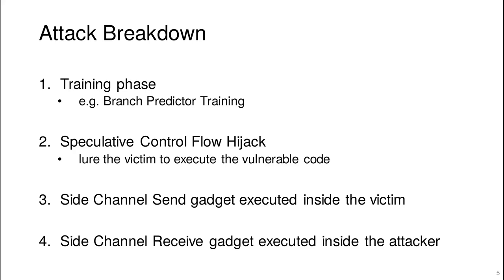With this in mind, we can look at the breakdown of most speculative execution attacks. There's a first phase during which the attacker trains the victim, with the purpose of maximizing the success rate and ensuring the victim leaks interesting data — secrets and the like. In the second phase, the attacker causes the control flow of the victim to be hijacked speculatively to an interesting location where a send operation of a side channel extracts data from the victim. In step four, the attacker executes the receive end of the side channel to retrieve the secret data.